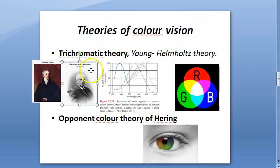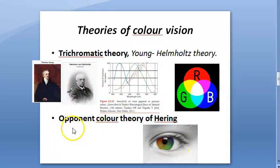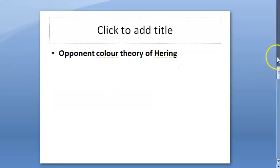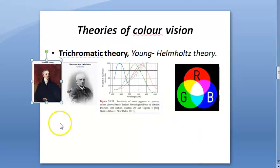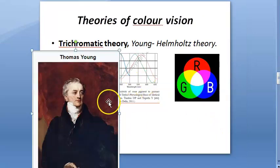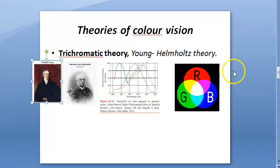Now let us look at the theories of color vision. We have the trichromatic theory, also called the Young-Helmholtz theory, which is very important. The other theory is the opponent color theory of Hering. We will first understand the trichromatic theory. It was given by Young and Helmholtz, who said there are three kinds of cones - red, blue, and green - each with its own pigment.